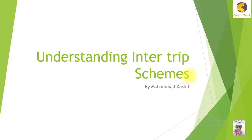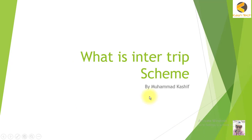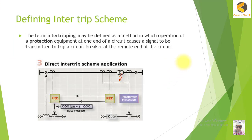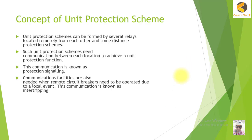Welcome. In this section we will study intertrip schemes. These intertrip schemes are used in protection systems at various voltage levels like 132 kV, 220 kV, 500 kV, and above, and are mostly used in transmission lines. We will start by understanding what an intertrip scheme is, why it is required, and the concept of unit protection, so you will be able to understand why we need this protection.